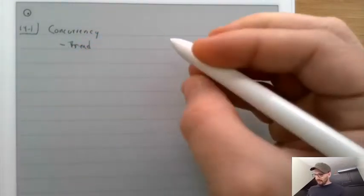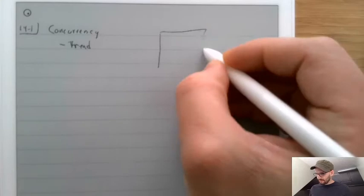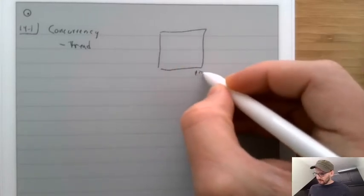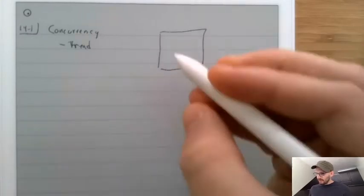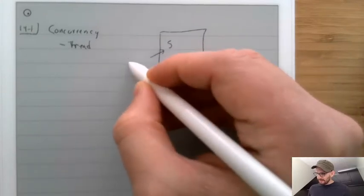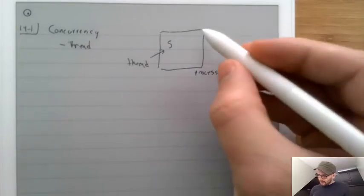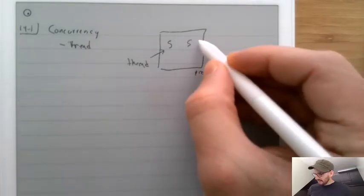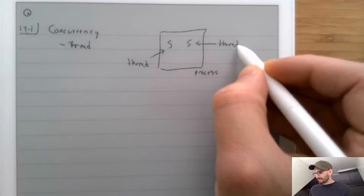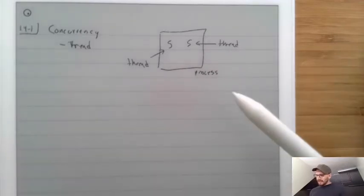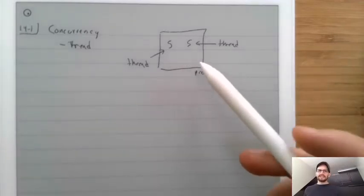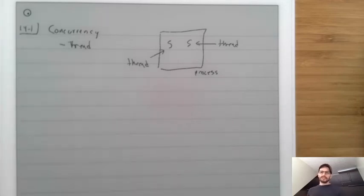The idea of a thread is that you have one process, and normally there's only one thing happening inside of it, and that is a thread. But if there are multiple threads, then now there are two things happening. Importantly, these are the same process, meaning that they share the same memory and resources, as opposed to being totally separate processes, like if you just ran two programs on your computer.